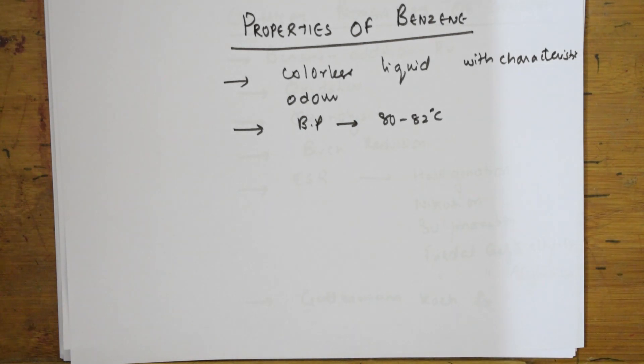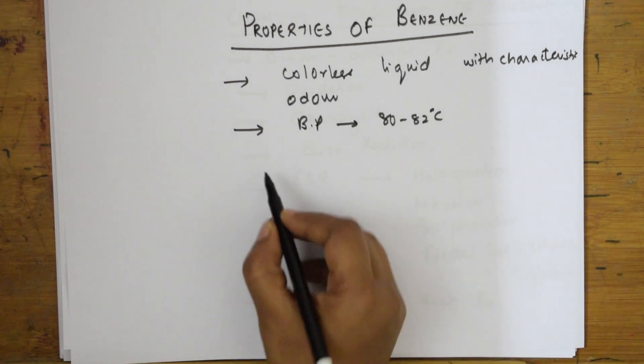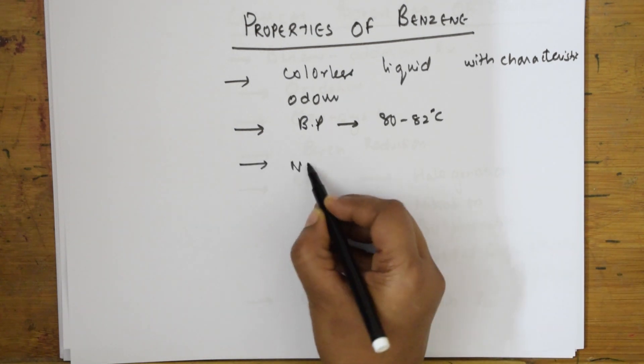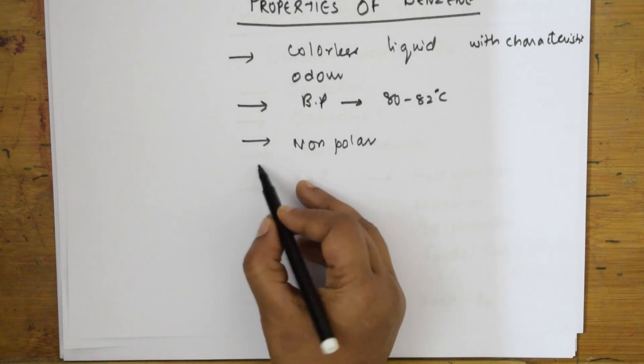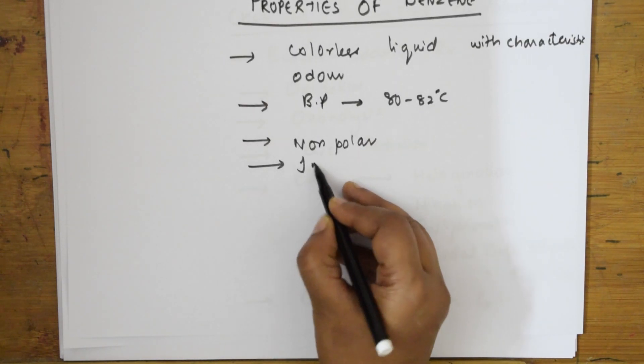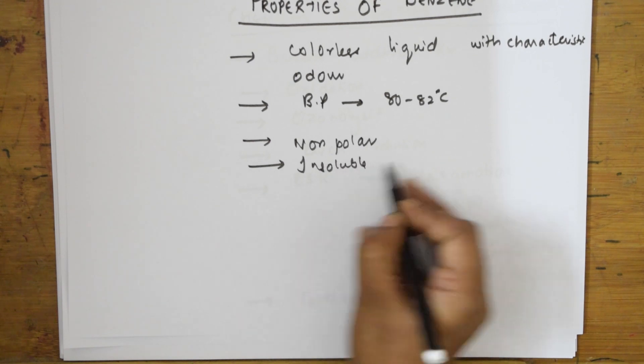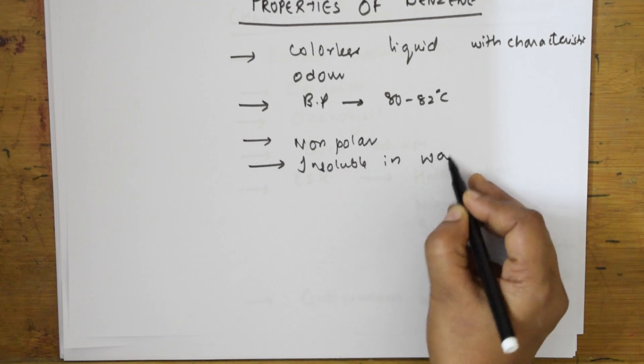When I see the structure of this, it is a non-polar molecule. If it is non-polar, automatically we will write it is insoluble in water. If it is polar it will be soluble in water. If it is non-polar it is insoluble in water.